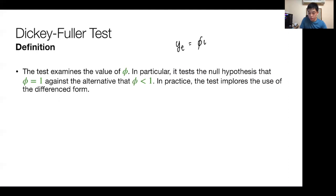In our model, we have phi YT minus 1 plus UT. The test is zeroing in on that phi value and making a hypothesis about what phi could be. It tests the null hypothesis that phi equals 1, and if phi equals 1, that's a random walk, which means the series is non-stationary.